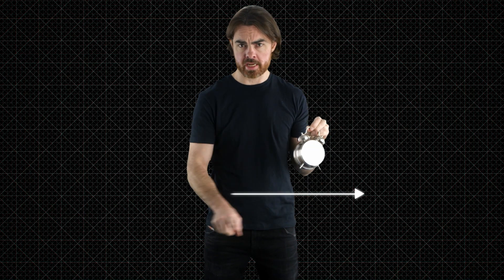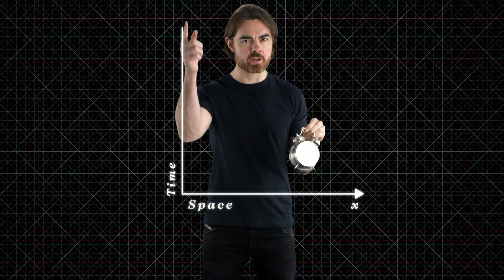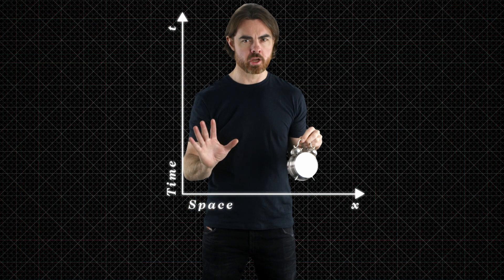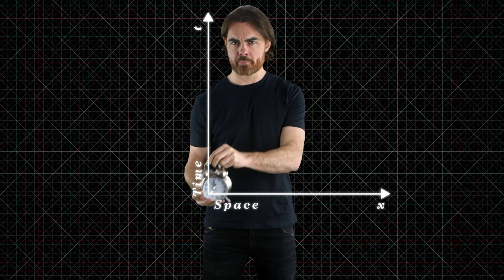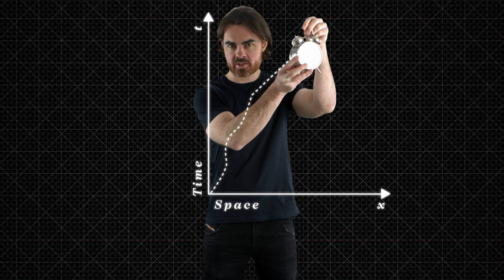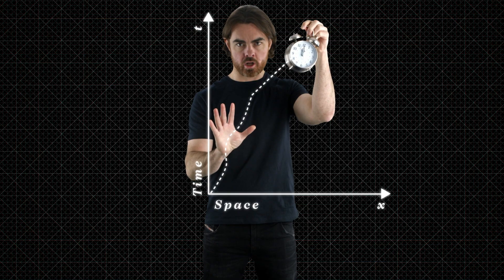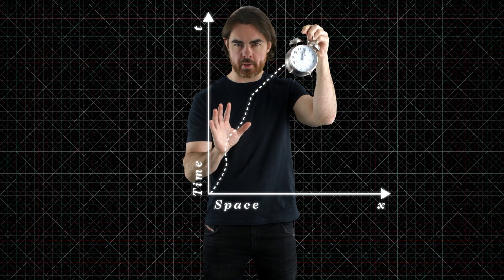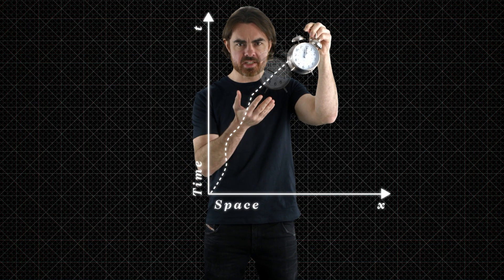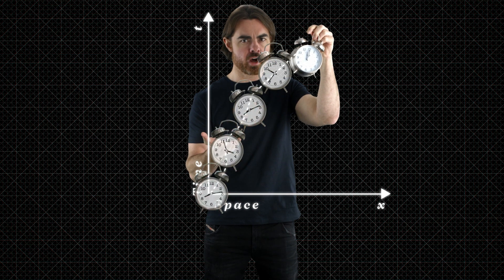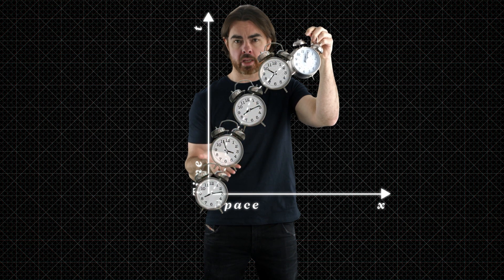A while ago, we introduced the spacetime diagram. It's just a graph of position in space, just one spatial dimension for simplicity, versus position in time. In this picture, a thing ends up tracing a path through time and space, and we call that path its world line. In fact, thinking in four-dimensional spacetime, a thing is its world line. So we define a thing as its complete spatial and temporal existence.